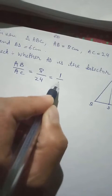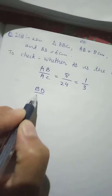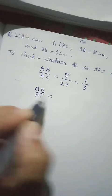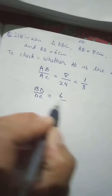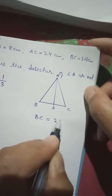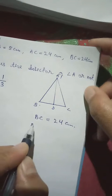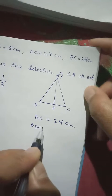AB we know is 8, AC we know is 24. Here we can divide: 8 divided by 24 equals 1/3. Then we can also take BD by DC. BD we know is 6, DC we don't know, but instead we know BC. So if we look from the figure, BC we have 24cm, but BC we can break it as BD plus DC.